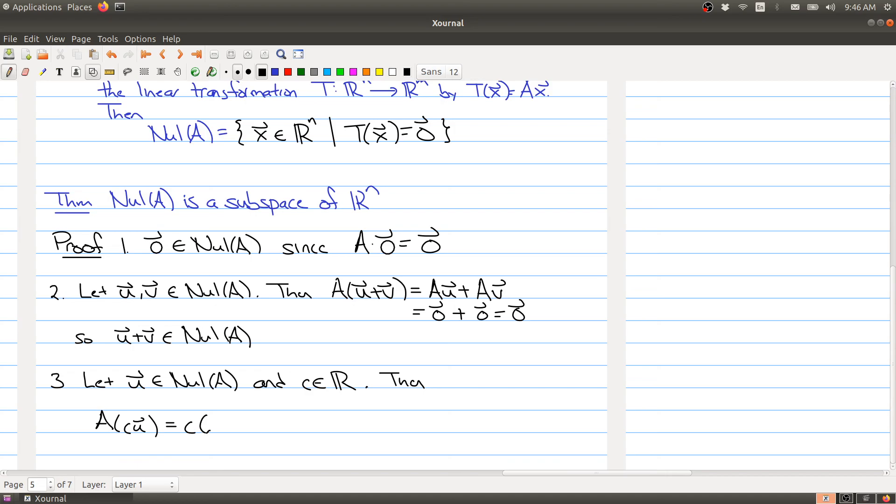Using my matrix operations, I know I can pull out the c, the scalar multiple. A times U has to be 0 because U is in the null set. But any scalar times a 0 vector is the 0 vector. So we get that cU is inside the null space of my matrix.